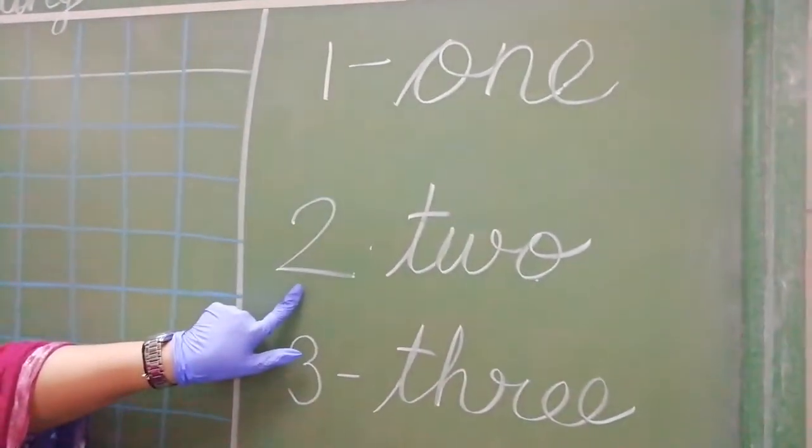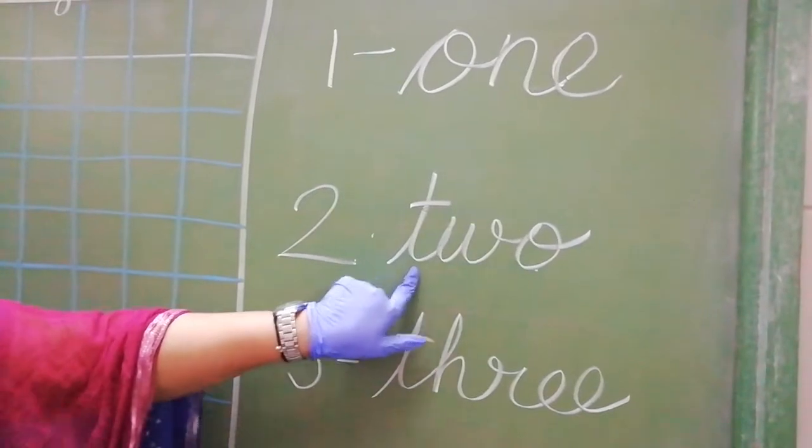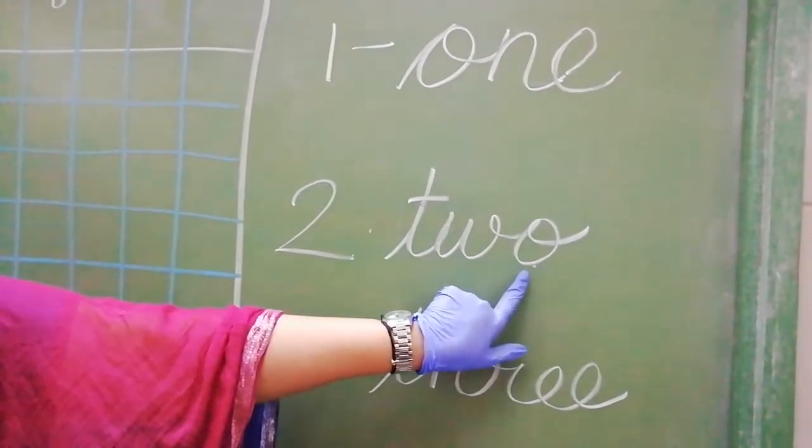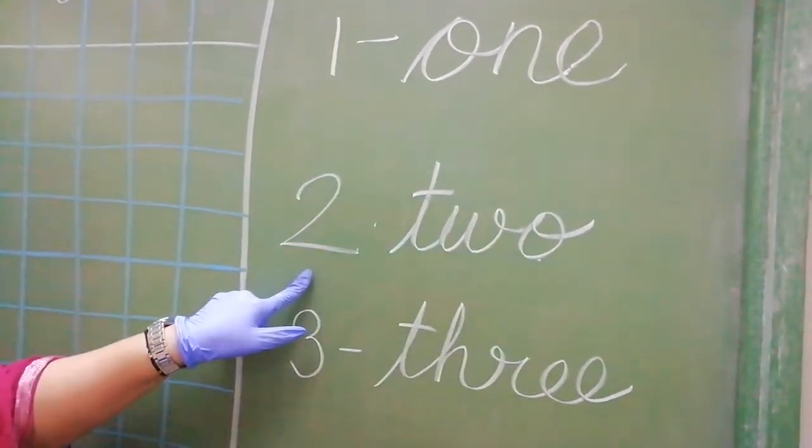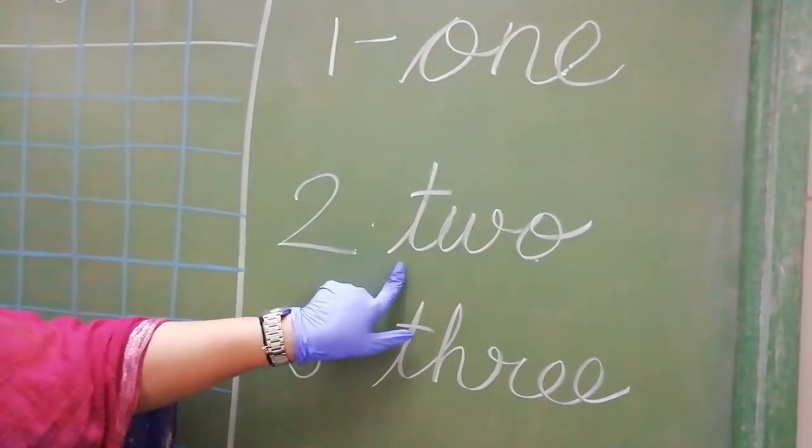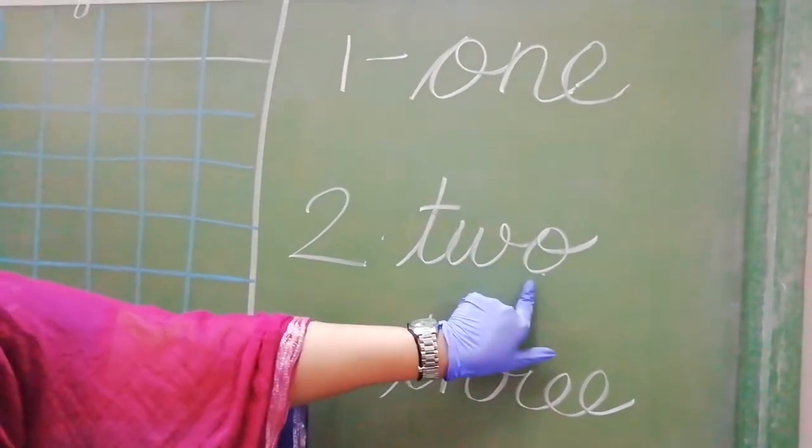This is number 2. Spelling of 2 is t-w-o, 2. Spelling of 2 is t-w-o, 2.